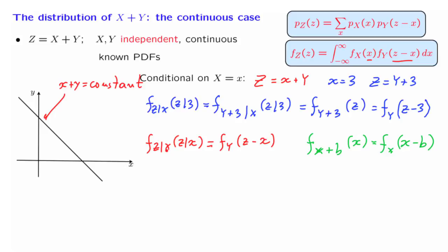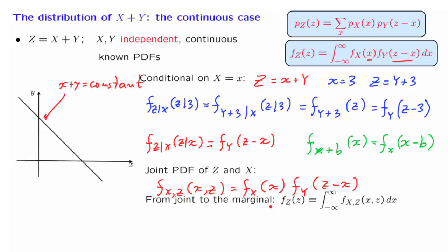Since we have the conditional, and we also know the PDF of X, we can use the multiplication rule to find the joint PDF of X and Z. By the multiplication rule, it is the marginal PDF of X times the conditional PDF of Z given X, which in our case takes this particular form. And now that we have the joint PDF in our hands, we can use another familiar formula that takes us from the joint to the marginal.